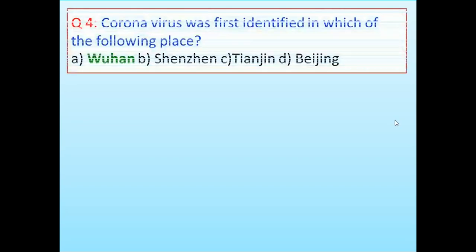Coronavirus was first identified in which of the following place? Wuhan, Shenzhen, Tianjin, Beijing. Answer is Wuhan.